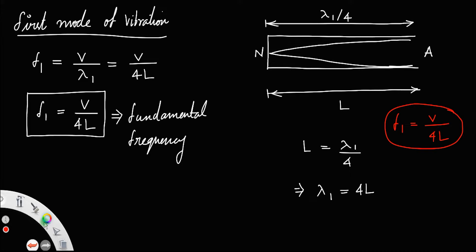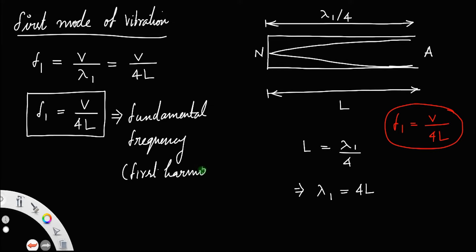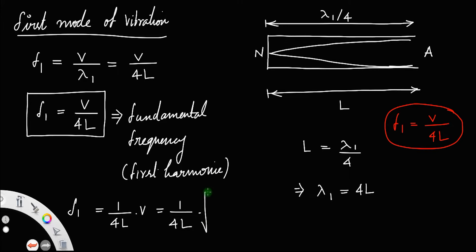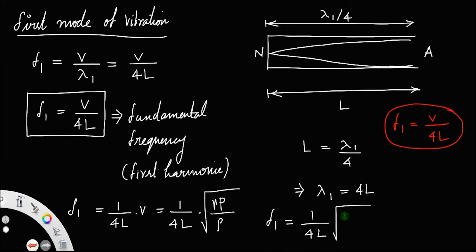This is the fundamental frequency, and we say it has the first harmonic. We can write f1 as 1 divided by 4L times v, which equals 1 by 4L times root of gamma P divided by rho. The expression for velocity of a longitudinal sound wave is root of gamma P over rho, derived from the Laplace correction. So the fundamental frequency f1 equals 1 by 4L times root of gamma P divided by rho.